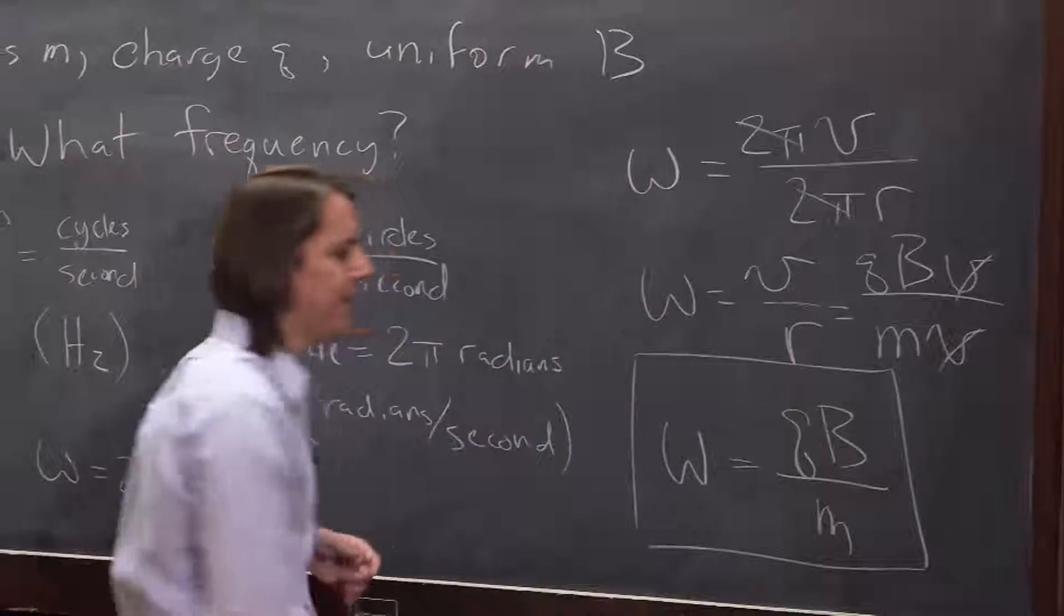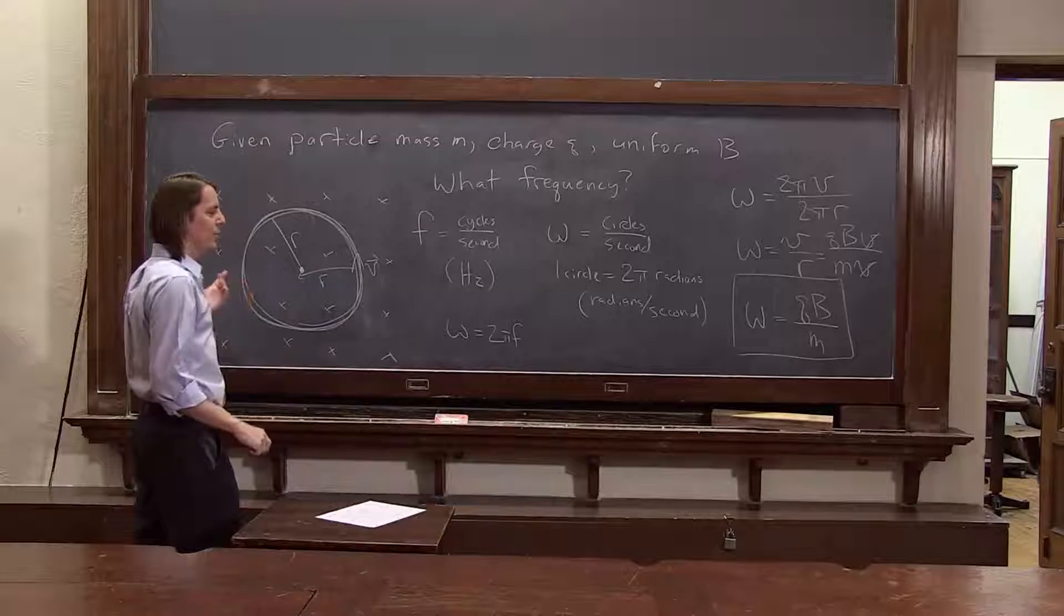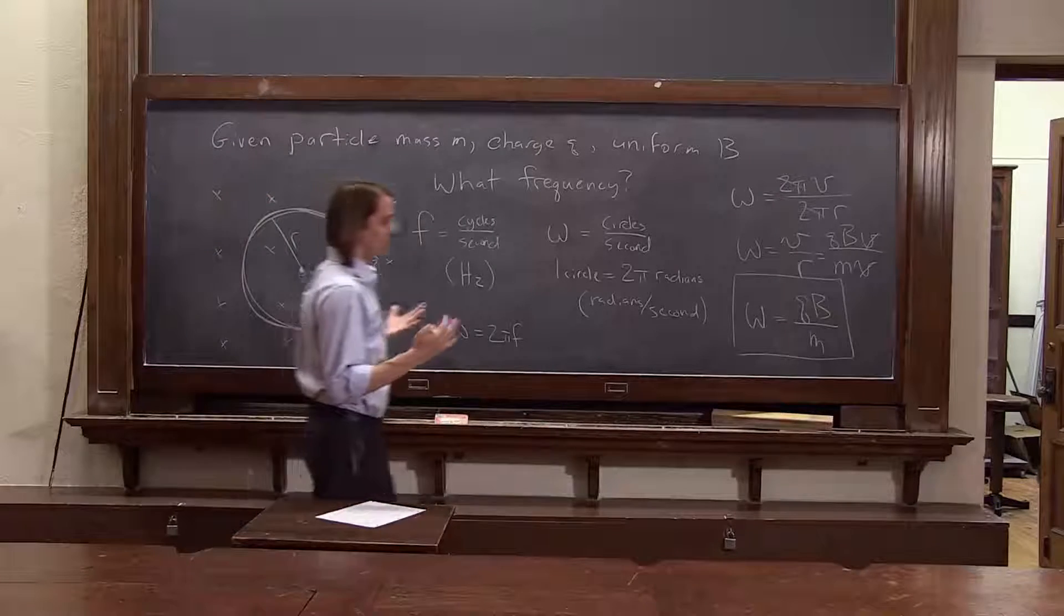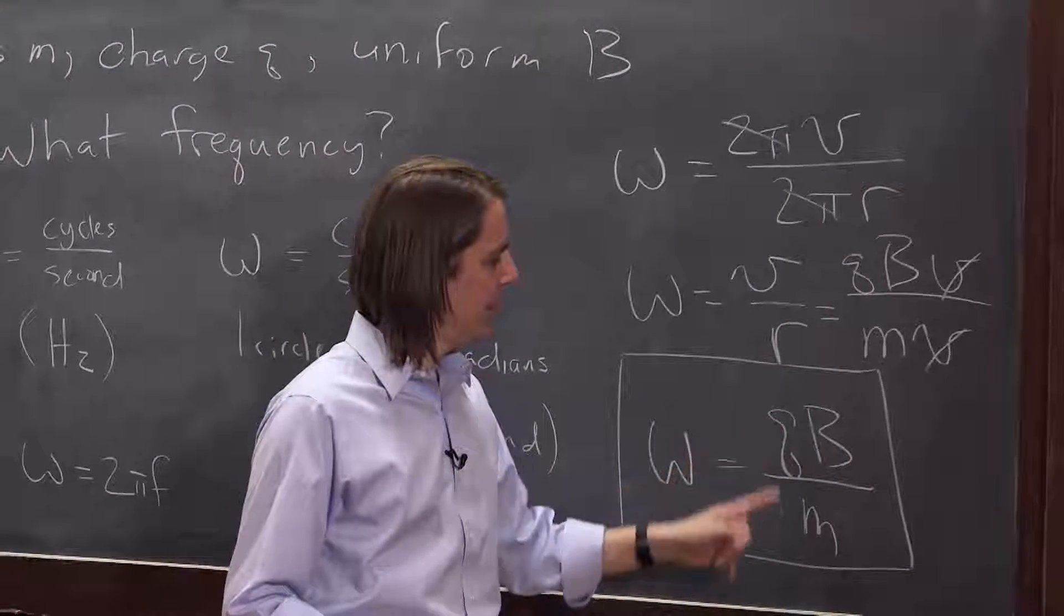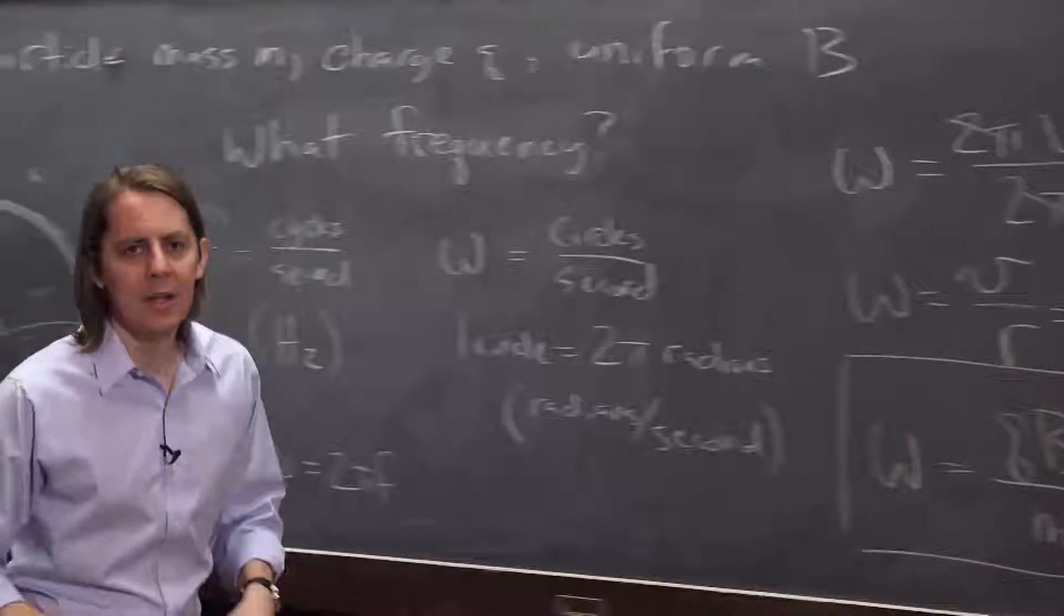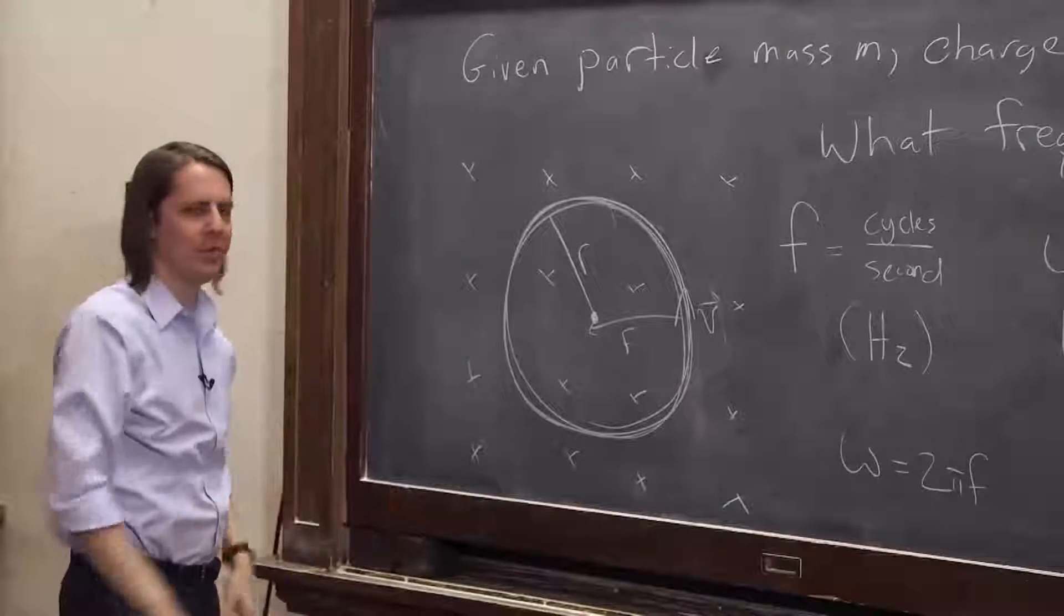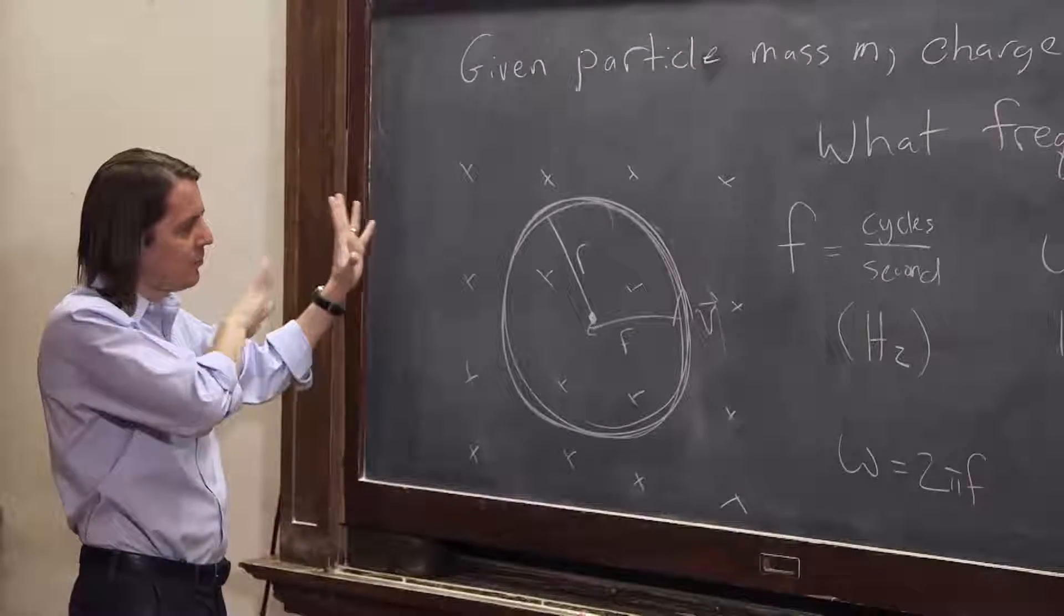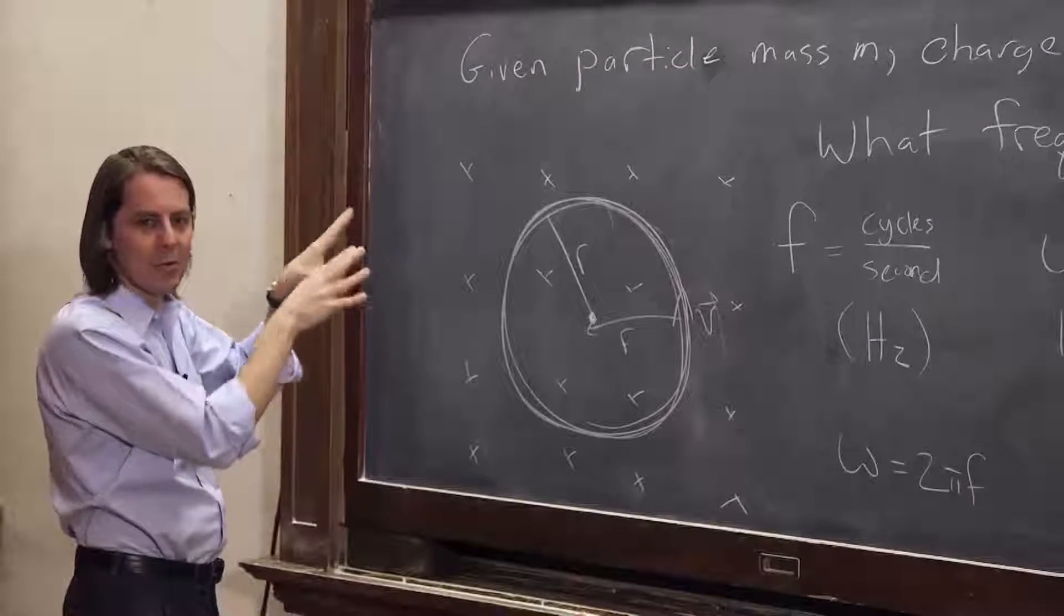And this is kind of fundamental and interesting because you find that the frequency it goes around has nothing to do with how fast it was going. It only depends on fundamental things to the problem. It depends on the charge of the particle, it depends on the mass of the particle, and it depends on the magnetic field you apply. So if I just take a big smattering of electrons and just throw them into a constant magnetic field, they're all just going to start spinning. And they're all, no matter what their initial velocity is, they're all going to just spin at the same rate or at the same angular velocity.